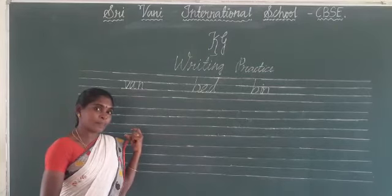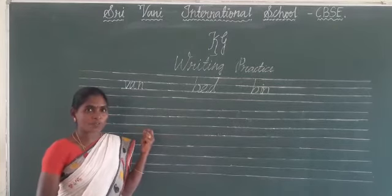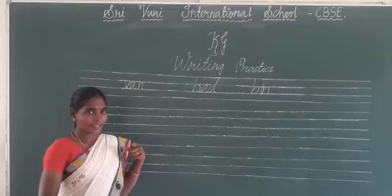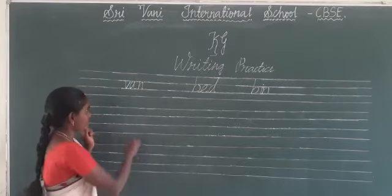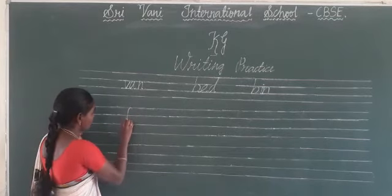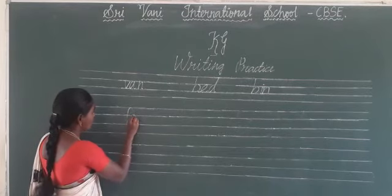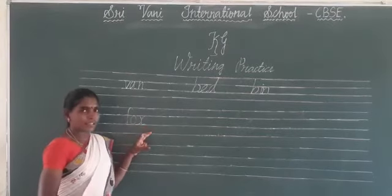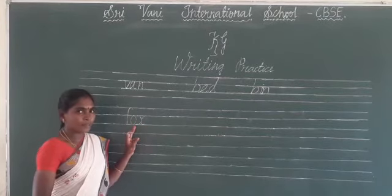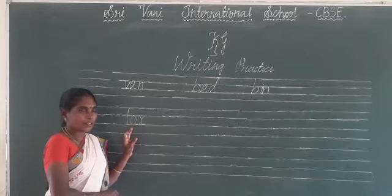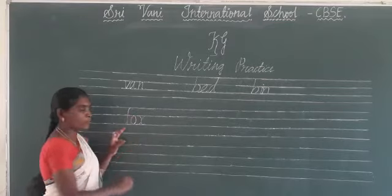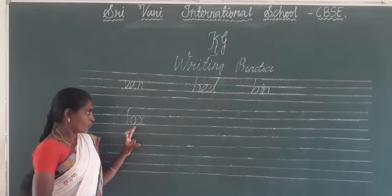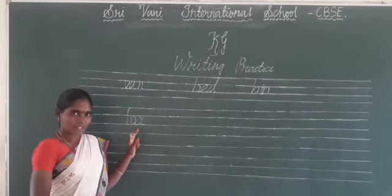Which animal is cunning? Yes, very good — fox! Fox is a cunning as well as intelligent animal. Do you know the spelling for 'fox'? The spelling for fox is F-O-X. What word is this? Fox. Which is the vowel here? O is the vowel. The sound produced by the letter O is the short 'o' sound. O produces the short vowel sound.